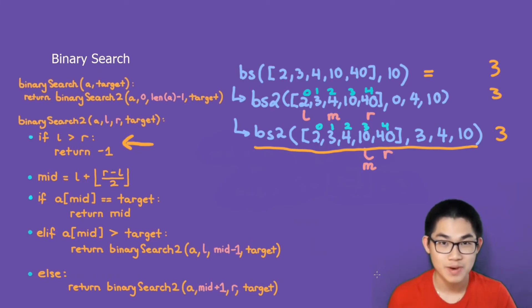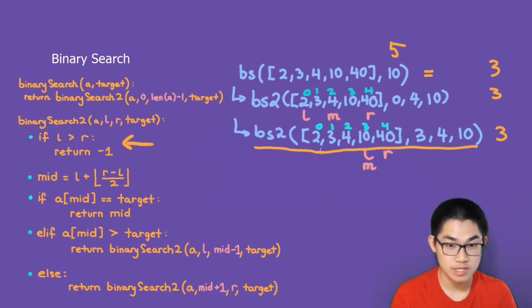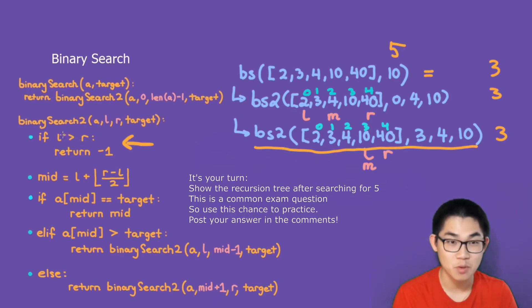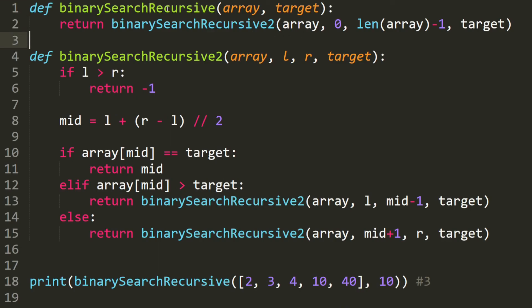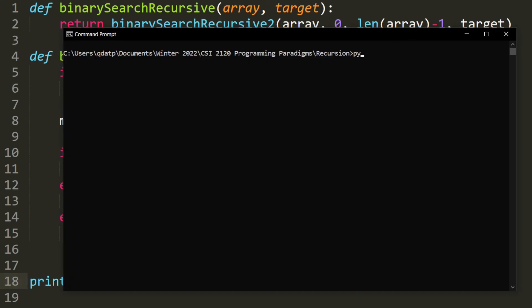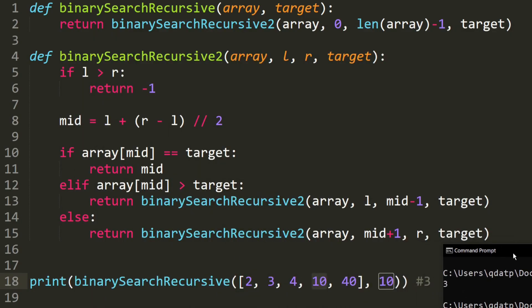Let's take a look at the code. Before we do, note that if we want to search for number 5, once you go through this tree you will reach the base case where L is larger than R, indicating 5 is not in this array, and you return negative 1. Here is the code for the recursive binary search. We want to find number 10, and it's at index 3 in this array. It produces the correct output.